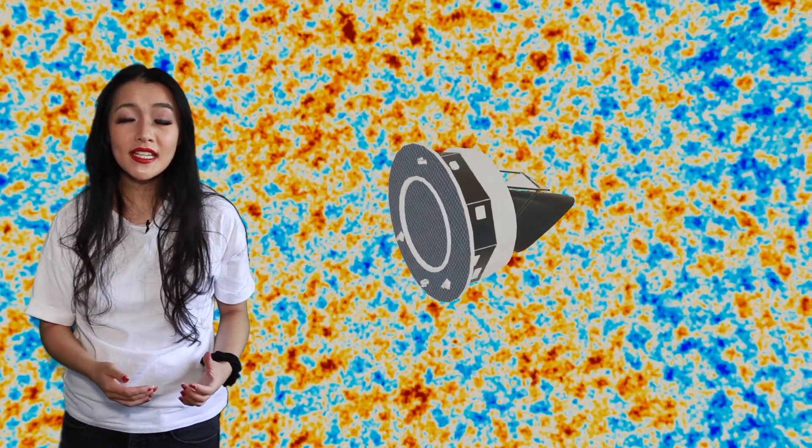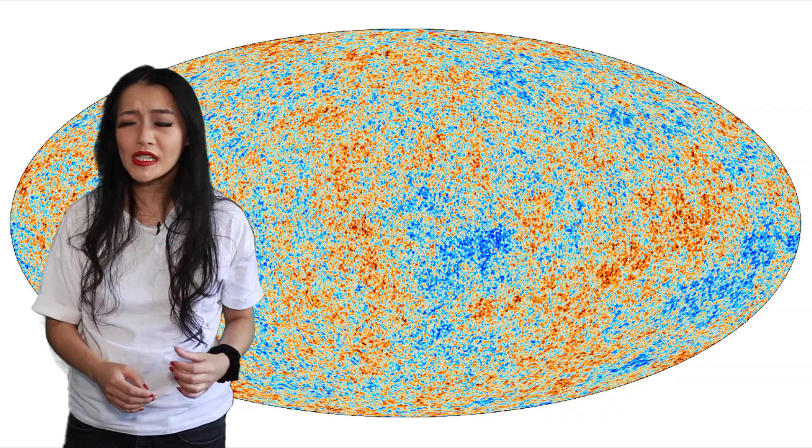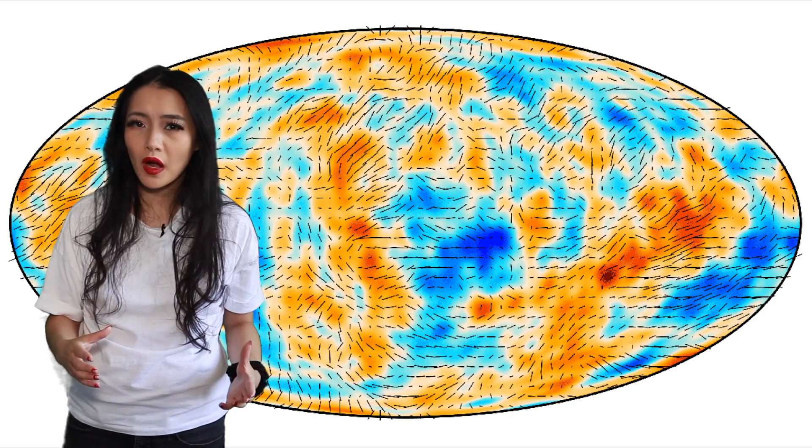However optical data is not the only place we're finding these disparities. The cosmic microwave background is a measure of radiation from the early universe that is emitted uniformly in all directions on the sky. However several observations have found an unusually large cold spot, the CMB cold spot.